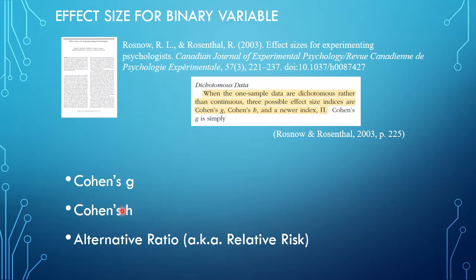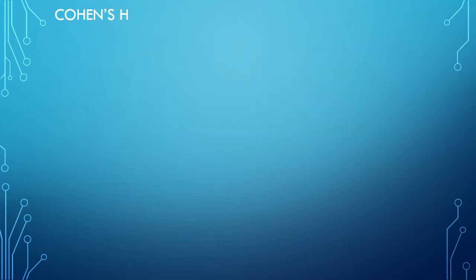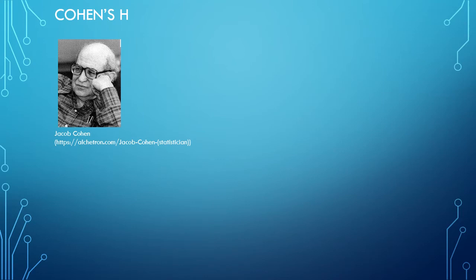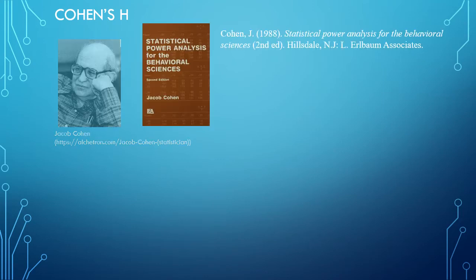Cohen's H is named after Jacob Cohen, and he wrote this among other articles, but I think this is one of the older ones: Statistical Power Analysis for the Behavioral Sciences, the second edition.